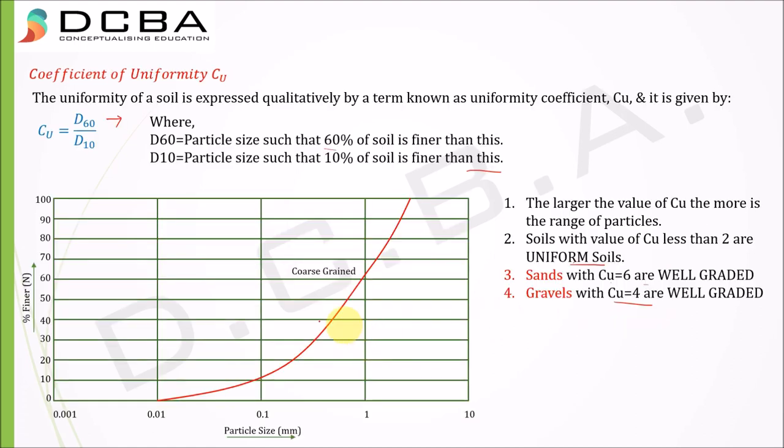Now if you see, D60 will be - if I draw a line from 60, a straight line, wherever it will come down, whichever size you will get here, that is your D60 size. And D10 is obviously 10% finer. Whichever size you get here, this is your D10. So D60 by D10 is your coefficient of uniformity.